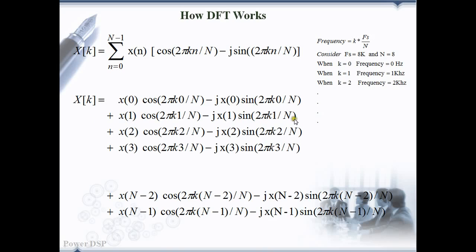For example, if we take the case when k is equal to 2, that is for 2 kilohertz, we are multiplying the samples of 2 kilohertz sinusoids to the input signal. We are correlating, probing and trying to find out if the input signal has this 2 kilohertz sin or cosine component.